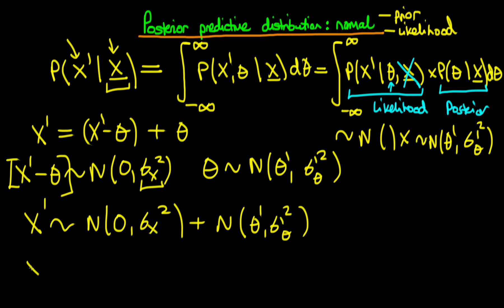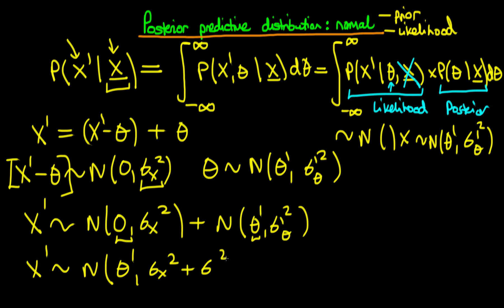In this case, x-primed is itself normally distributed with a mean equal to the sum of the two means — zero plus theta-primed — so just theta-primed, and a variance equal to the sum of the two variances — sigma-squared-x plus sigma-squared-theta-primed. So the posterior predictive density, written down here, is itself normally distributed, which is exactly what we would have obtained by doing the integral directly.